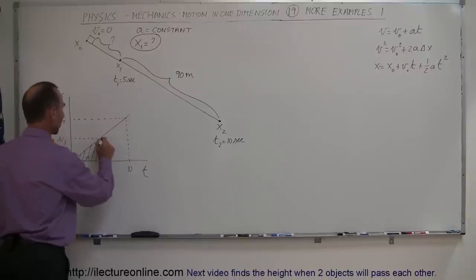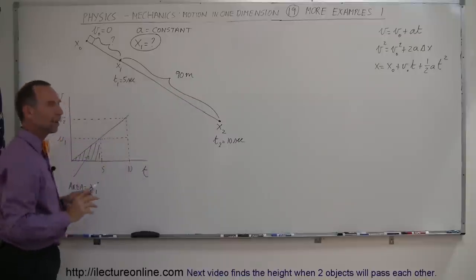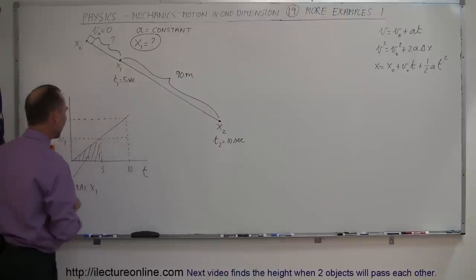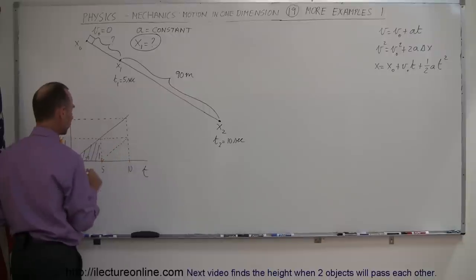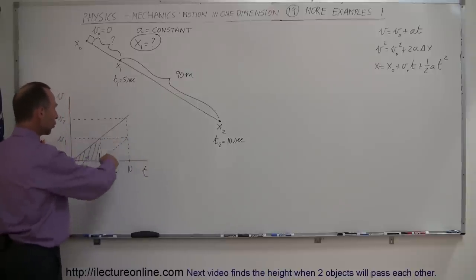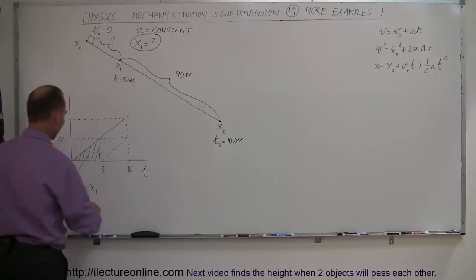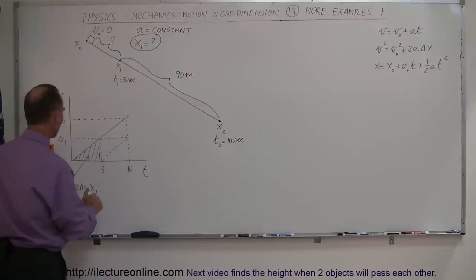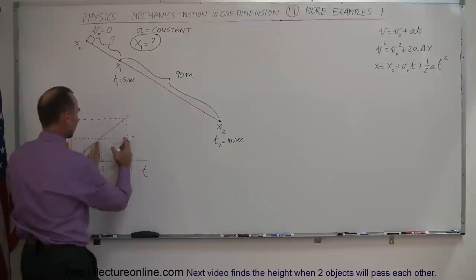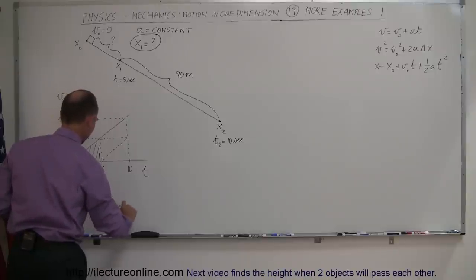This distance right here — if I draw a line across — I can realize that this area represents the 90 meters. And notice that this triangle is the same size as this triangle, so this triangle represents the distance of x1. Then if I draw a straight line from corner to corner, I realize that this triangle equals this triangle, and this triangle equals this triangle. In other words, the area underneath the curve from x1 to x2 is three times the area underneath the curve from x0 to x1. So the distance from x1 to x2 is three times the distance from x0 to x1.